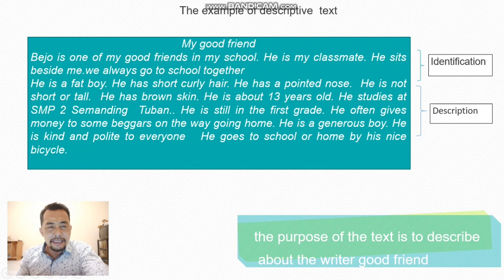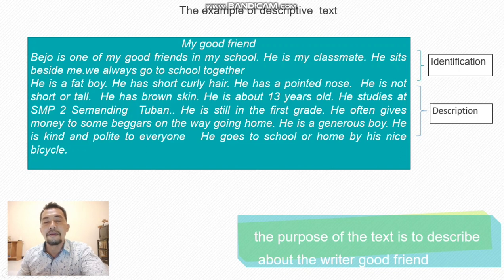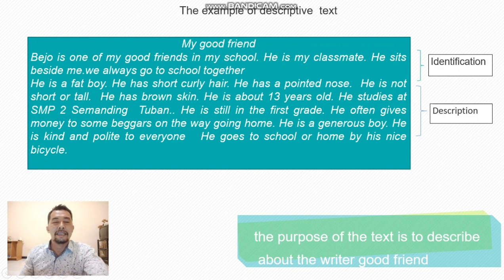The description paragraph reads: 'He is a fat boy. He has short curly hair. He has a pointed nose. He is not short or tall. He has brown skin. He is about 13 years old. He studies at SMP Tsanawiyah Duban. He is still in the first grade. He often gave money to some beggars on the way going home. He is a generous boy. He is kind and polite to everyone. He goes to school and home by his nice bicycle.' The phrase 'a fat boy' is a noun phrase — adjective plus noun.